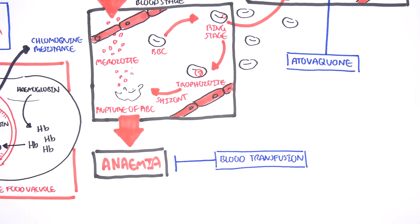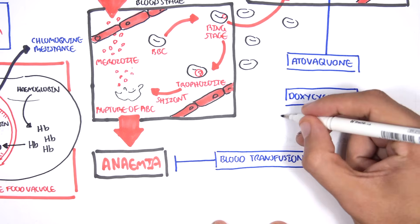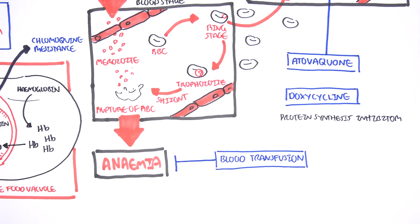Doxycycline is another anti-malarial drug, which you might remember as being an antibiotic. Doxycycline is essentially a protein synthesis inhibitor. Tetracycline, another antibiotic and protein synthesis inhibitor, is also used for anti-malarial treatment and prophylaxis.